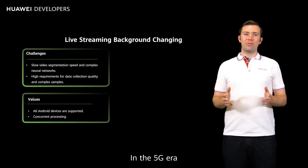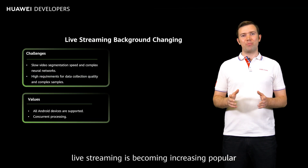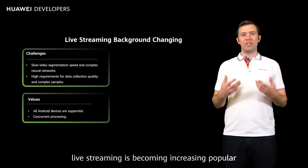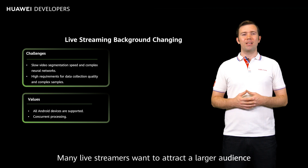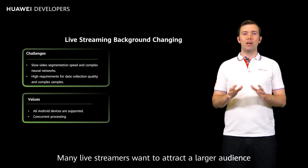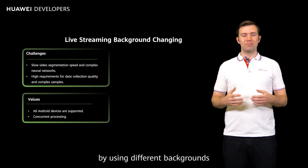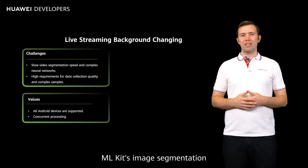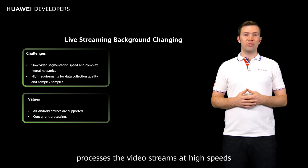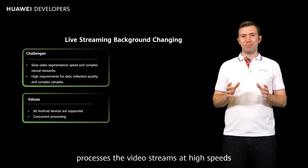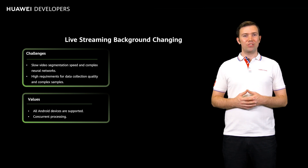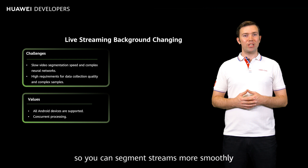In the 5G era, live streaming is becoming increasingly popular. Many live streamers want to attract a larger audience by using different backgrounds. ML Kit's image segmentation processes the video streams at high speeds, so you can segment streams more smoothly.